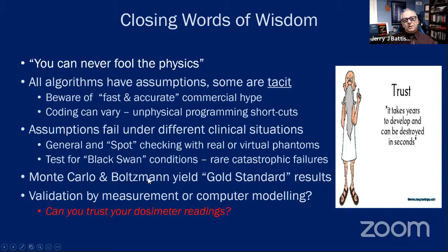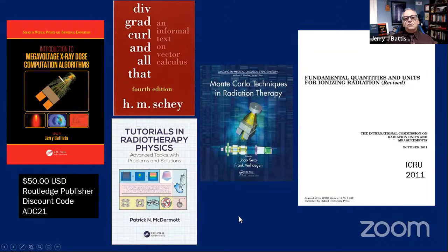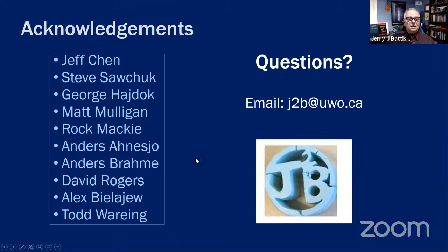These two methods — Monte Carlo and Boltzmann — can yield gold standard results. Then the big question becomes: do you trust your dosimeter more than the calculation? Which do you believe — the Monte Carlo or Boltzmann result, or your dosimeter with its potential reading artifacts? Trust takes years to develop and seconds to destroy. Thank you for listening. This book is now available in paperback for about 50 USD, and with this discount code at the publisher site you'll get another 30 percent off — a pretty economical resource for graduate students, residents, and faculty.